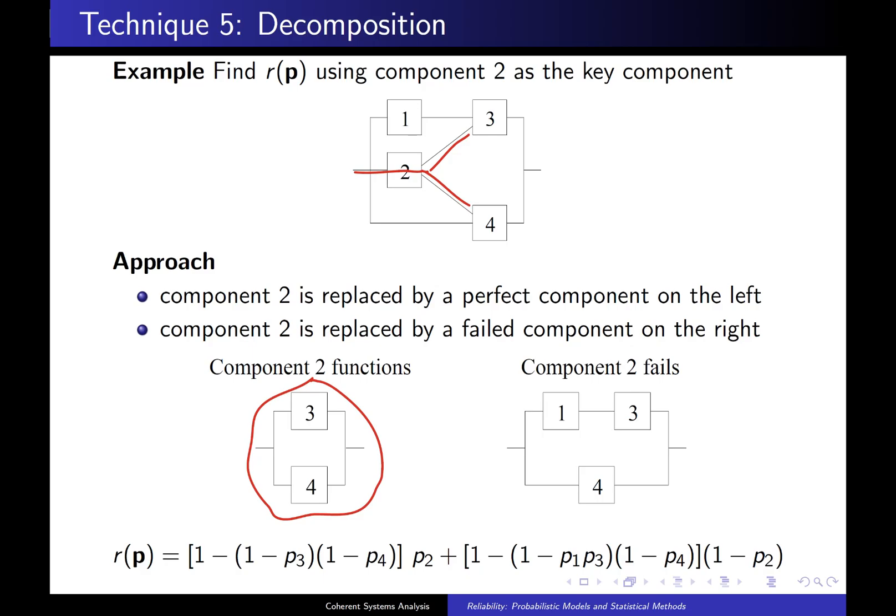Now the other extreme is you say, what if component 2 is replaced by a failed component? The way I like to think of that is if component 2 right here has failed, then I can think of getting rid of all that. If I know it's failed, it's like it's not even being there. And now if you look at the remaining system, you can see that it is also a parallel system. This time, component 1 did not become irrelevant.